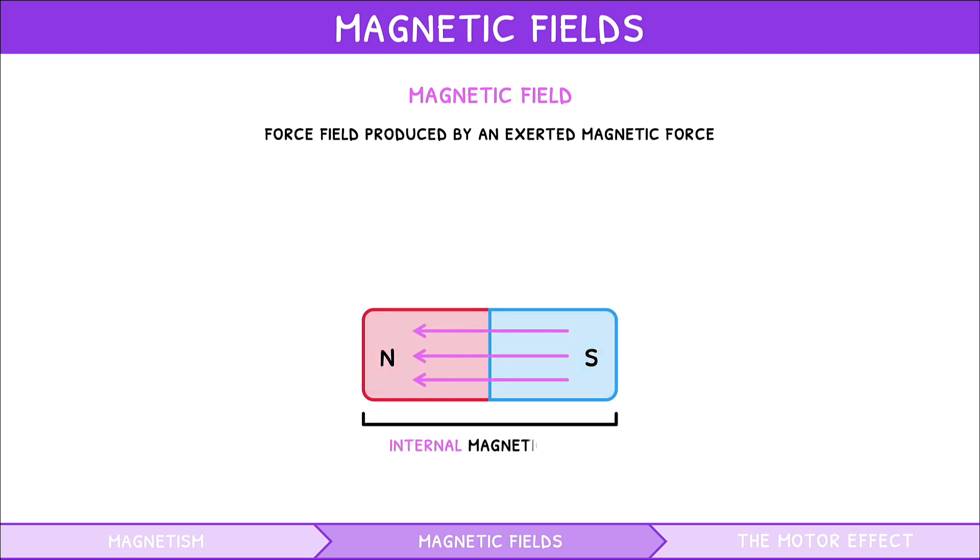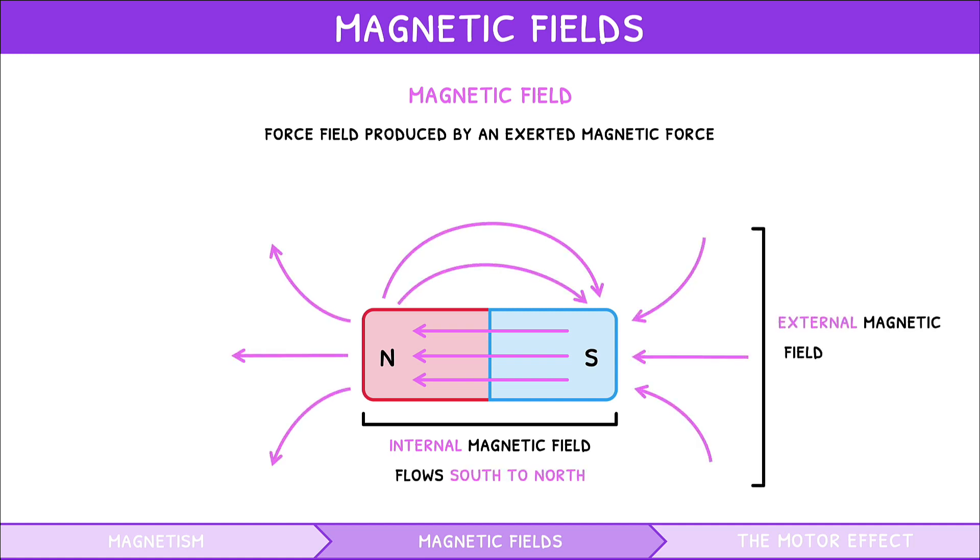The internal magnetic field inside the magnet flows from south to north, and the external magnetic field outside the magnet flows from north to south. This creates a continuous path of generated magnetic force.